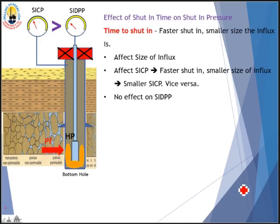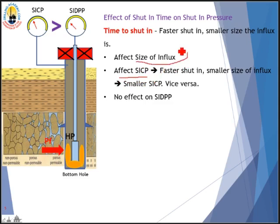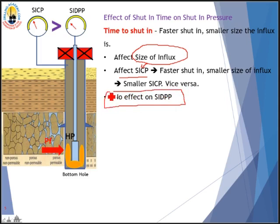The third factor is the effect of shut-in time on shut-in pressure and the size of the influx. The faster we shut the well, the smaller the size of the influx. A smaller influx results in a smaller shut-in casing pressure, and vice versa. However, shut-in time has no effect on shut-in drillpipe pressure at all.